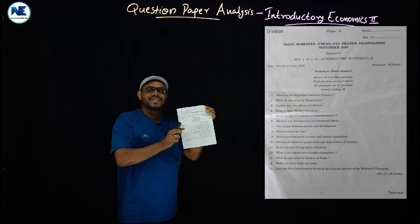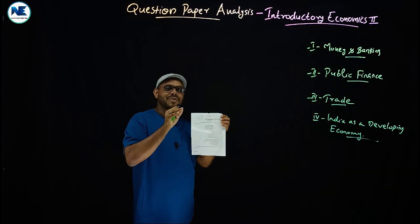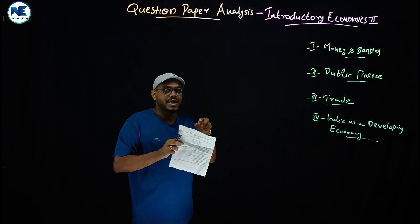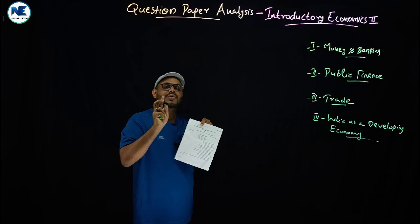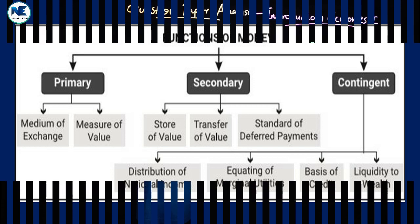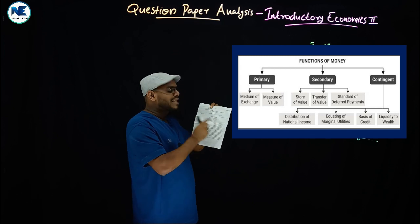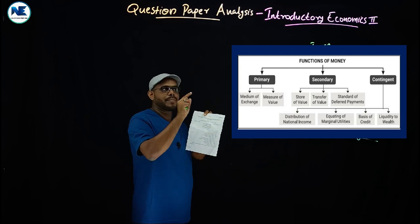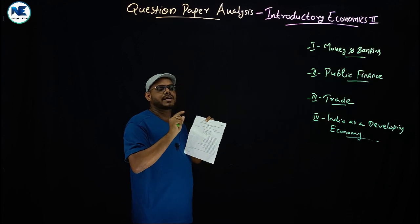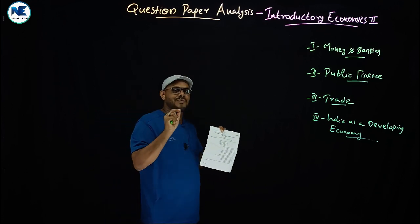The first important question is: what are the important functions of money? This is from Module 1 — functions of money — covering primary functions, secondary functions, and contingent functions. For a 3-mark answer, write 3 to 4 points. You should include the definition of money, then its functions. Also expected topics: demand for money, supply of money, and Fisher's quantity theory of money.